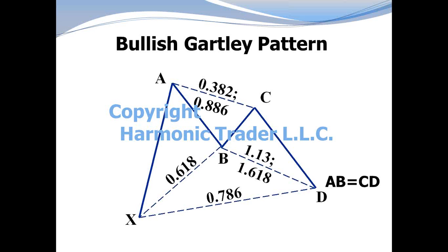Primarily, the B point must be at a 0.618 retracement of the primary XA leg. This midpoint at the 0.618 is the defining limit for this M type structure and differentiates it from other variations of an M type pattern. The B point establishes other measurements including the 0.786 retracement of the XA leg, with the BC extension that can be a 1.13 or as much as a 1.618 measurement to converge with an equivalent AB equals CD pattern. These three measurements define the potential reversal zone at the completion of the structure.